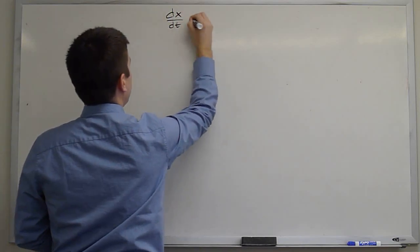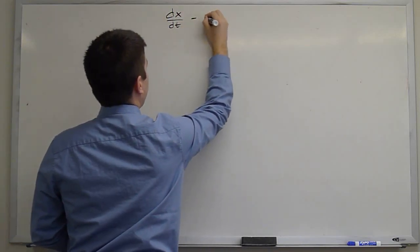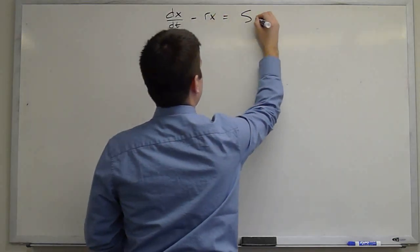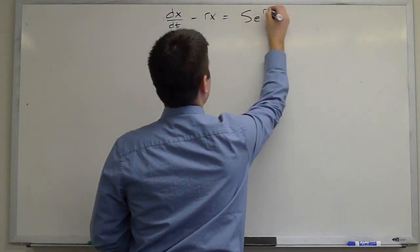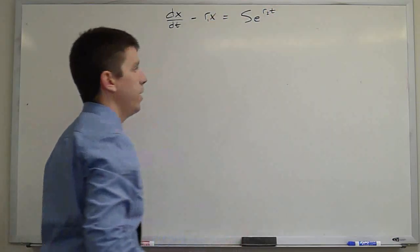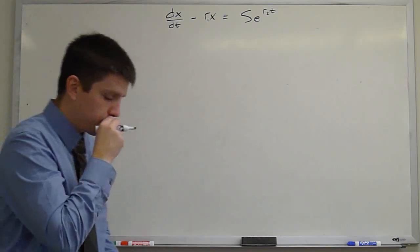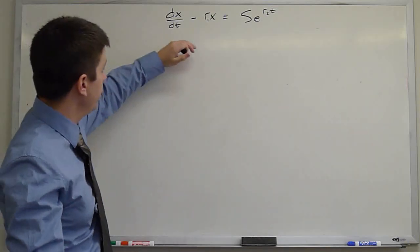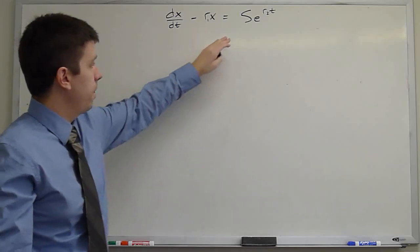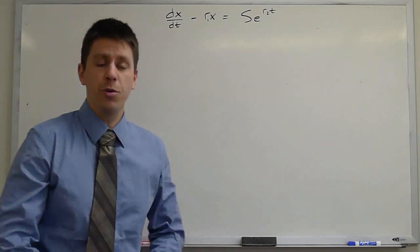dx/dt minus r*x equals s*e^(r2*t). As you can see, it's a linear ordinary differential equation with constant coefficients and a non-homogeneous forcing term that is an exponential.